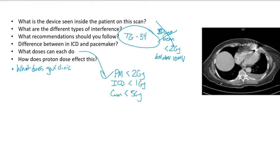You want to record that in ARIA or whatever your record and verify system is. Make journal notes, tell the nurses, follow those recommendations. Avoid 10 MV, don't have direct beams.